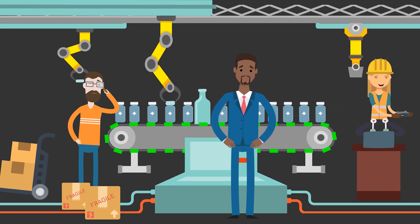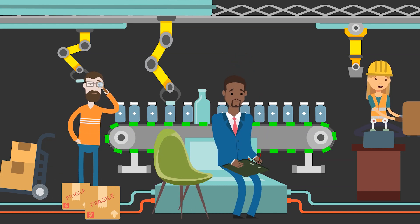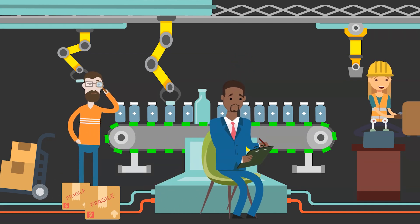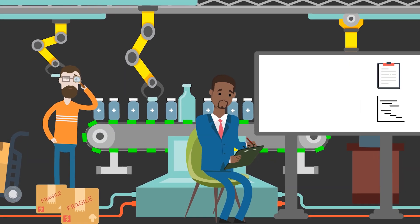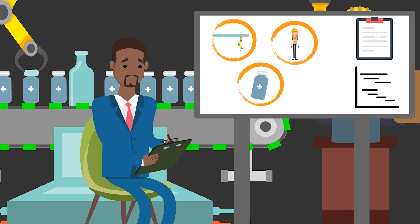Numerous production orders need to be processed here every day. This requires a wide variety of resources. Chris's job is to ensure that the appropriate resources and capacities are available in sufficient quantities at the right time in production.